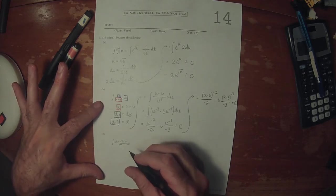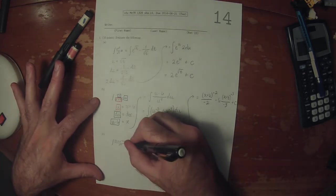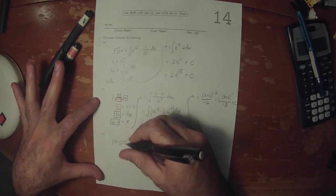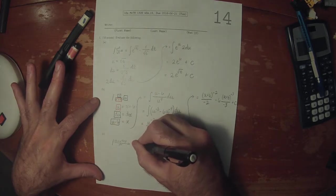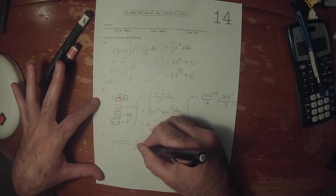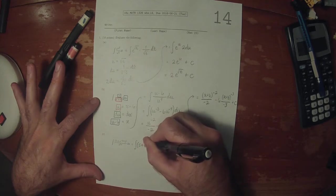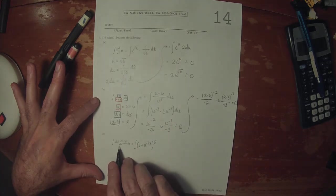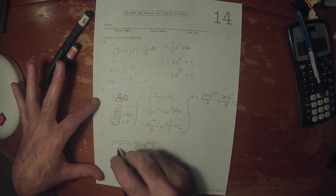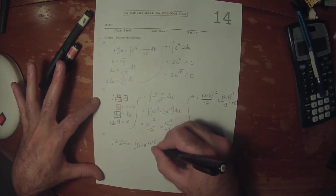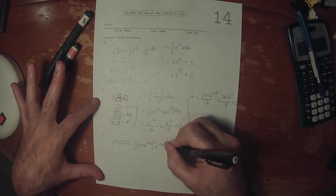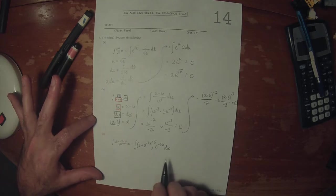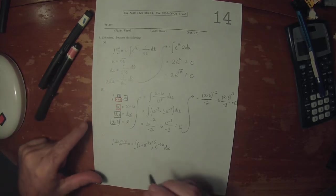On part c, this antiderivative could be rewritten as 5 plus e to negative 3x to 5, and then move this e to negative 3x to the numerator as e to negative 3x. And then hopefully at this point the substitution is more obvious.